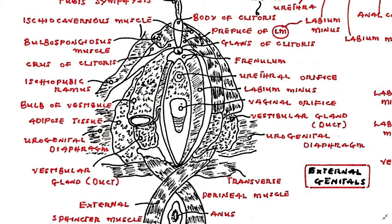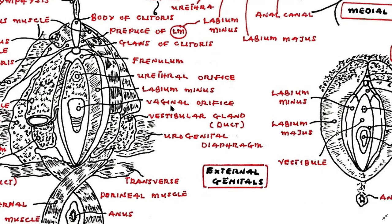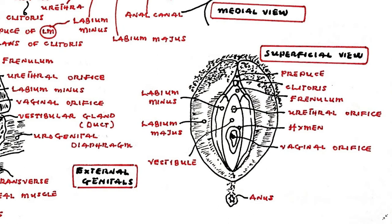The erectile bulbs of the vestibule are separated into two bodies, covered by the bulbospongiosus muscle, and protrude into the vagina during sexual stimulation. The immature vaginal orifice is often closed or partly so by a thin mucosal membrane known as the hymen. The mature vaginal orifice is often surrounded by a thin remnant of this mucosa that was often torn with general physical or sexual activity.